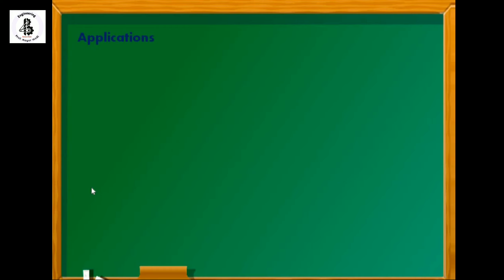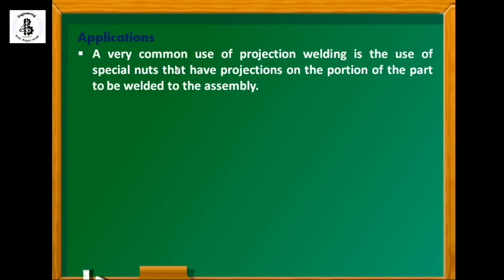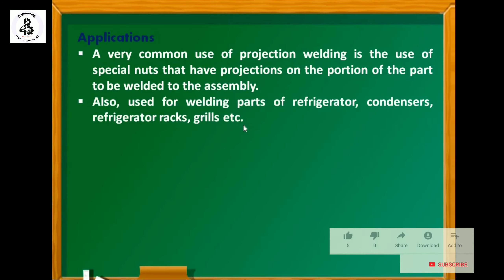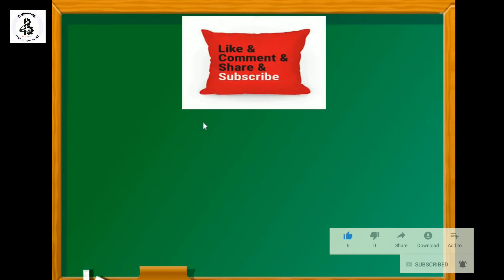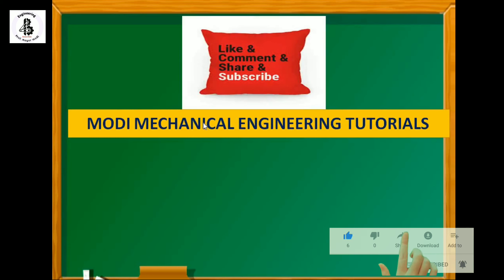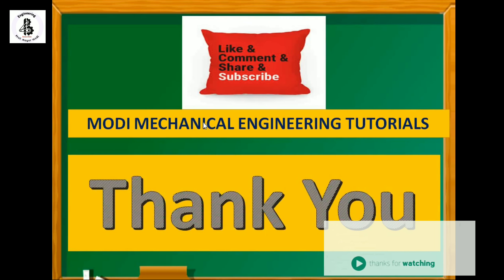Now we will see the different applications of projection welding process. A very common use is the use of special nuts that have projections on the portion of a part to be welded to the assembly. It is also used for welding parts of refrigerator condensers, refrigerator racks, grills, etc. I hope you understood this — if you liked this, then subscribe and share Modi Mechanical Engineering Tutorials. Thank you so much and keep watching.